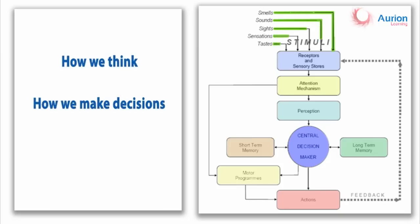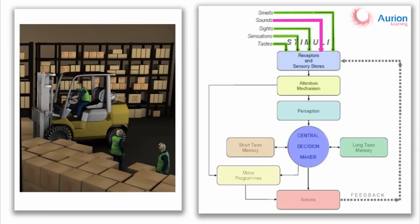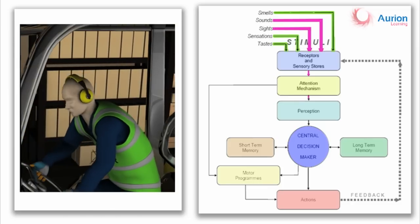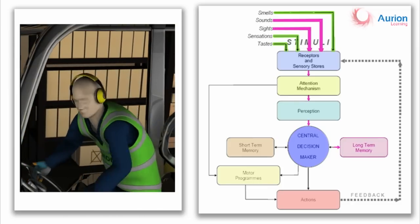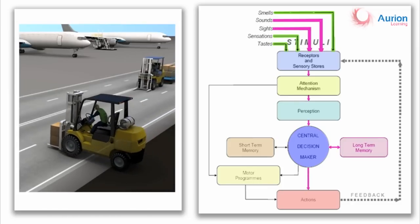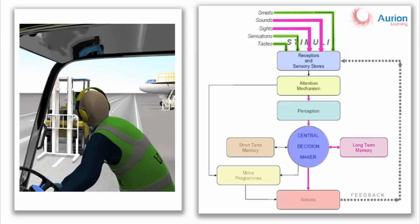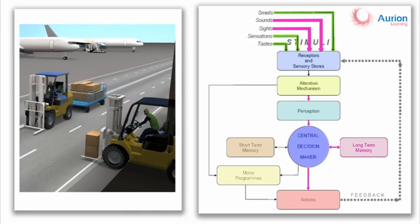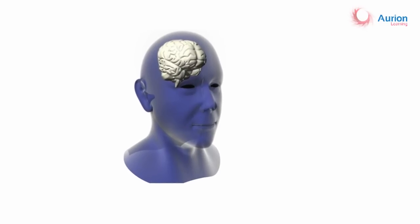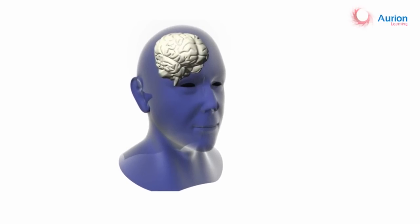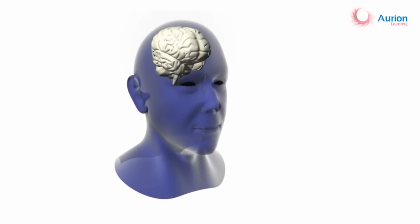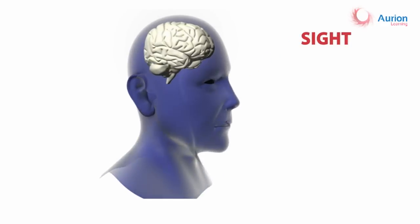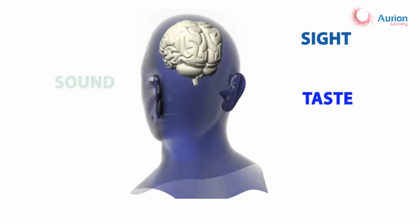Our eyes, ears, and nose send us various signals which the human brain processes and understands, and then takes a decision based on it. Professor, we should explain this in a little more detail. Of course, professor.